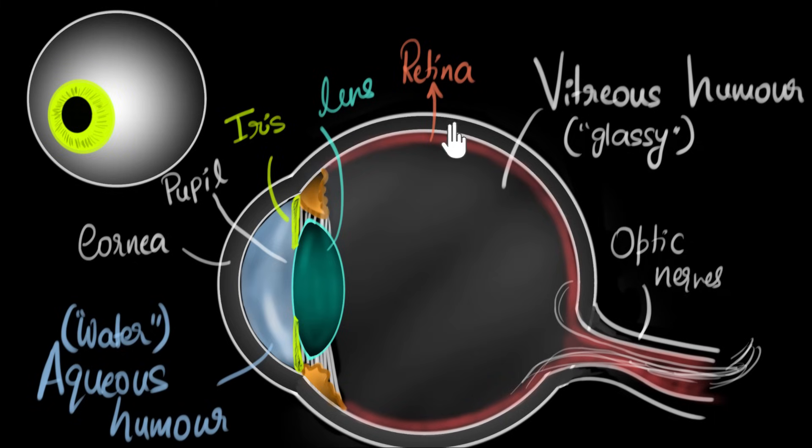So it's a jelly-like transparent material and its job is to maintain the shape of our eyes. Without this humor, our eyes could get easily crushed under the weight of the stuff that is on top of it. So the vitreous humor is a transparent jelly-like substance. The aqueous humor is also transparent, but it's watery kind of substance.